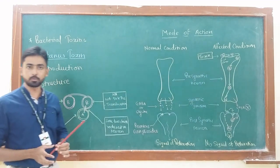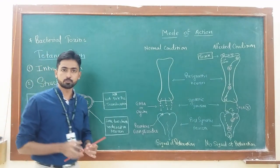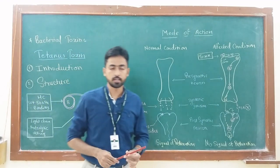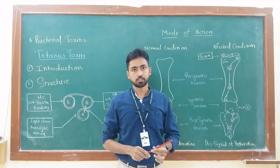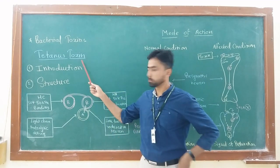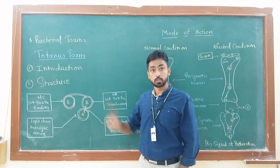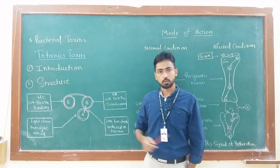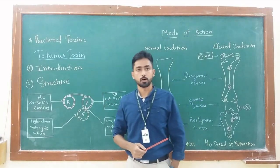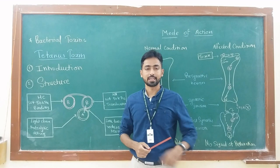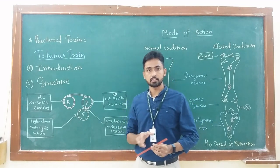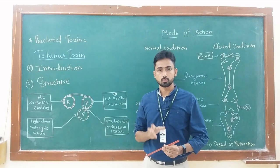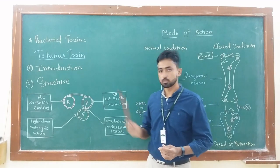We know that this is also an example of exotoxin which is produced by Clostridium tetani inside deep wounds under unhealthy conditions. This is one of the most important neurotoxins after botulinum toxin. The tetanus toxin has a lethal dose 50 value of 2.5 to 3 nanograms per kilogram in rats. That means to kill 50% of test rats, 2.5 to 3 nanograms dose of this toxin is sufficient.